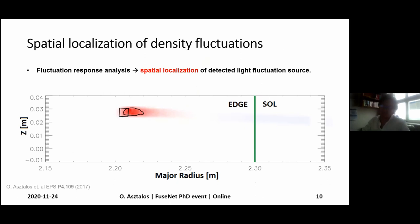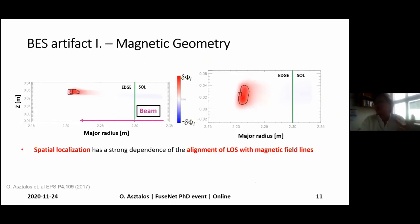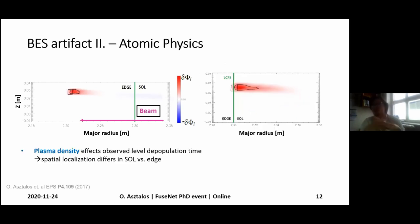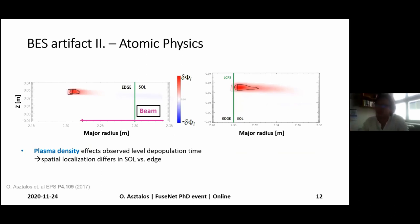Well, usually there's always a but in these situations, more so when we take into account the alignment of line of sight and magnetic field lines. If this is unfavorable, then this very happy situation turns into a nasty one, where the spatial localization essentially degrades by almost an order of magnitude because the misalignment is high. Another artifact of beam emission spectroscopy comes from the atomic physics processes — specifically the depopulation time of the observed level, which has a strong density dependence. Therefore, detector pixels in the edge plasma are well localized, and those in the scrape-off layer, less so. This is also an effect that has to be accounted for.